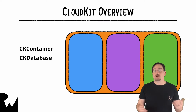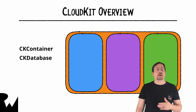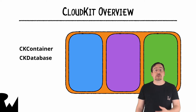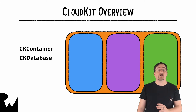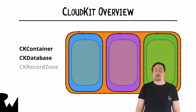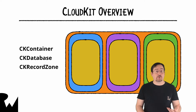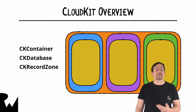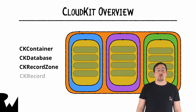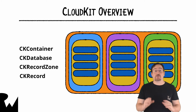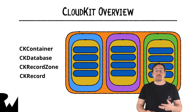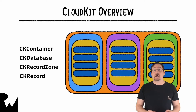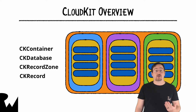The public database is available to everyone. The private database is only available to the user, and the shared database is composed of data that was shared from other users. Record zones live inside of databases — these zones are where you group your data. The data itself is stored in what is called a record. Records are composed of a variety of different types, and these data types, while limited, should be more than enough to model the data structure of your apps.